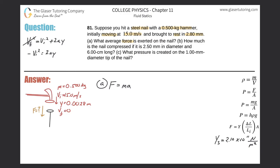Now looking at the signs: the initial velocity is pointing down, so it's negative 15, but when you square that result, this term becomes positive. The y value must also be negative because the displacement is pointing down — final height is lower than initial height. So doing final minus initial gives a negative displacement.